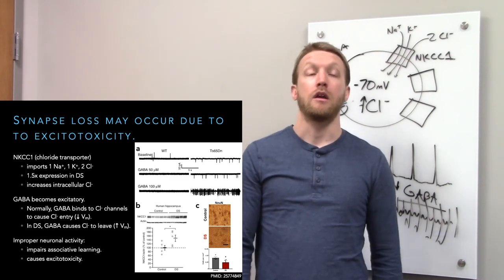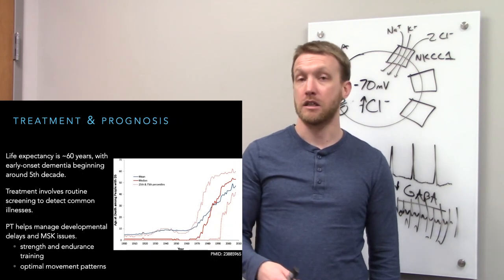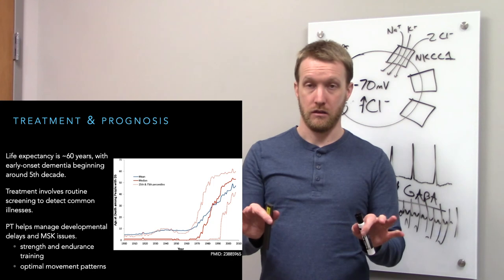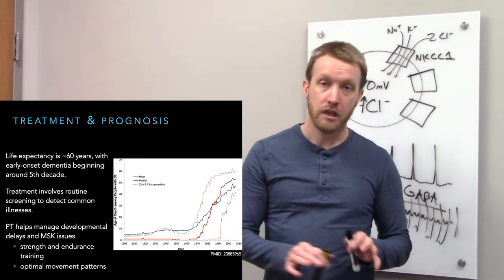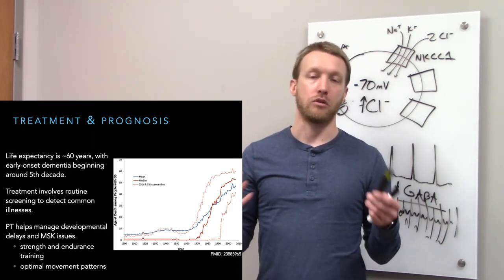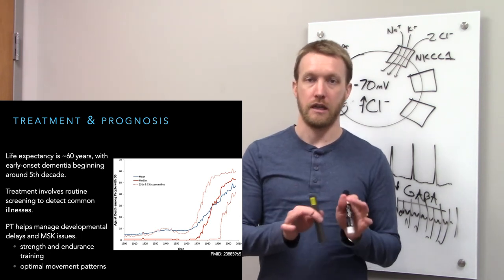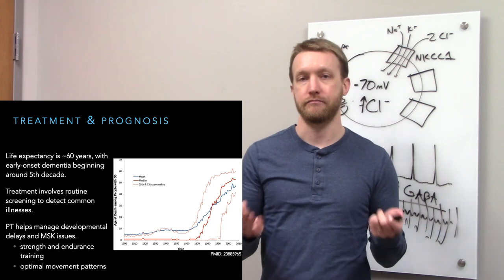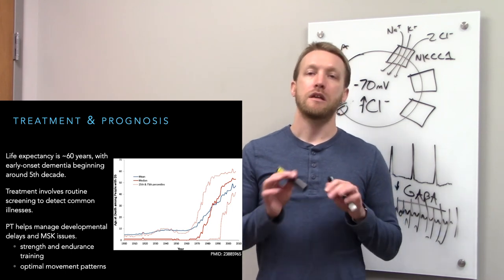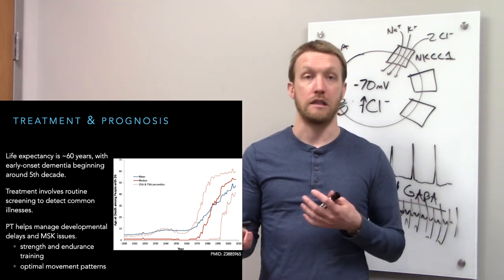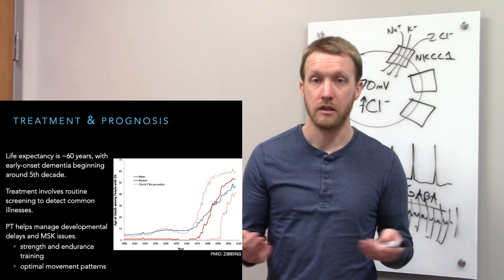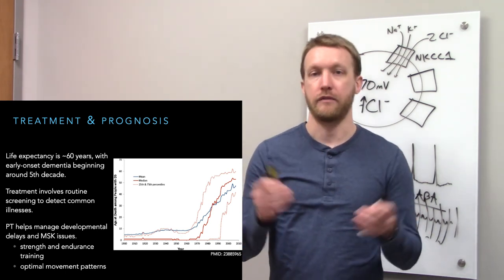Now as far as treatments go, there's a laundry list of issues and as such there's a laundry list of treatments available. Depends on what we find. The big thing that we need to do is have routine screening to detect common illnesses such as congenital heart defects or pulmonary infections and treat them as they arise. Congenital heart defects: surgery. Pulmonary infections: might be antibiotics. Depending on the issue that we find, the appropriate treatment needs to be applied. Since there's more problems than I can tell you about in the time that I have, there's again more treatments than I have time to tell you about.